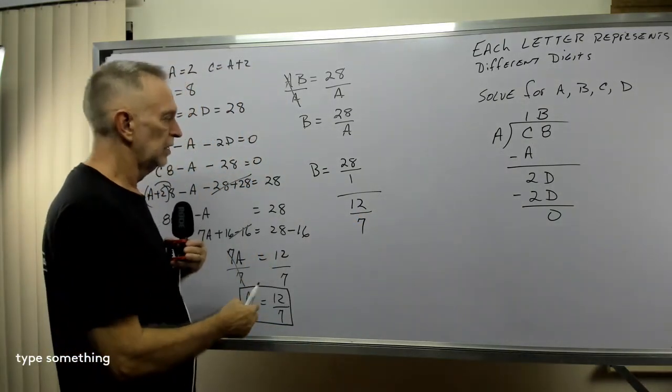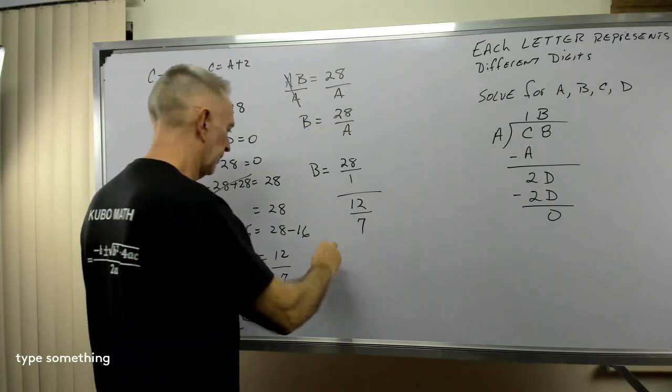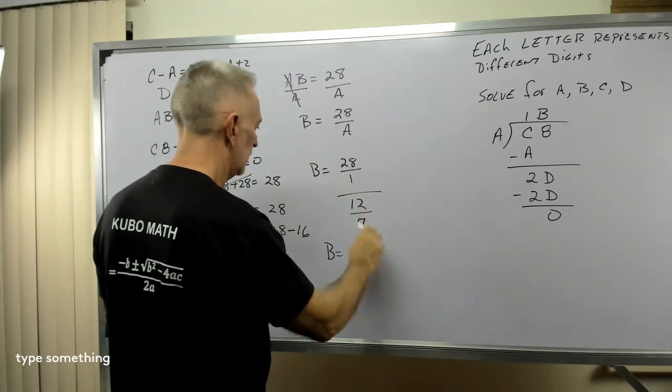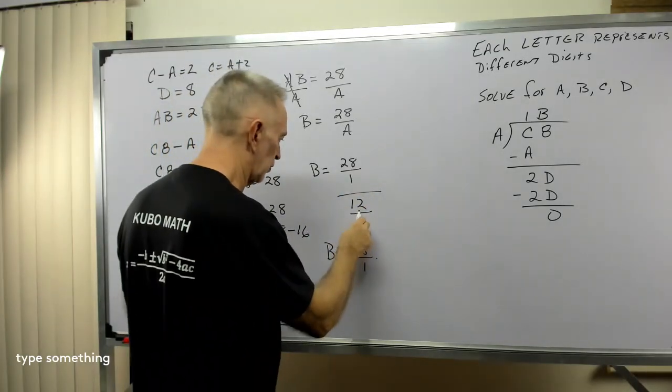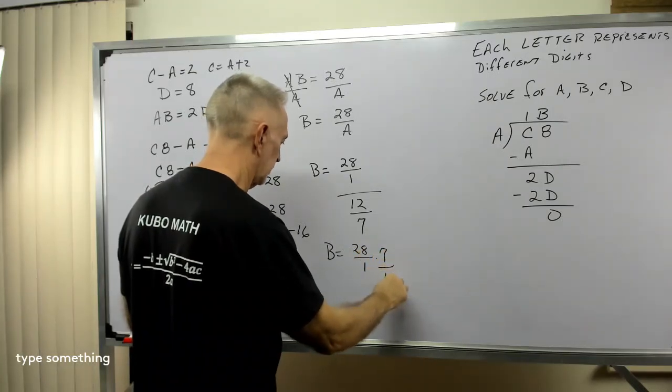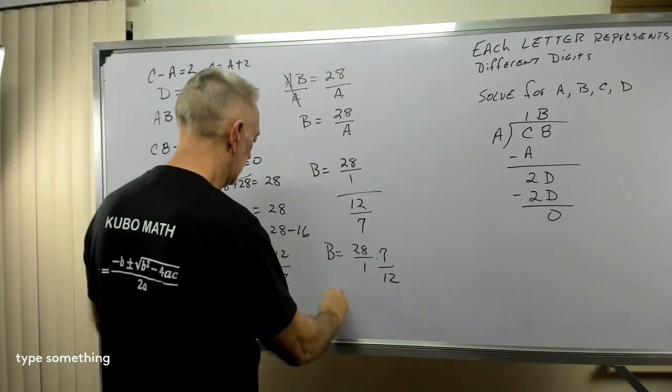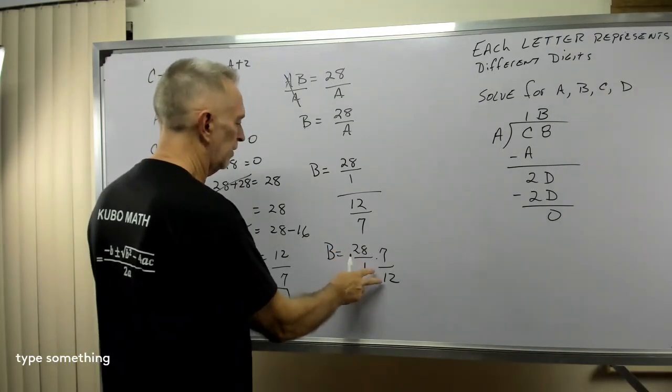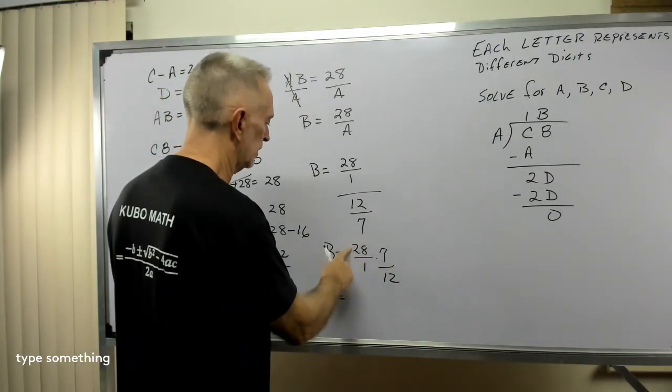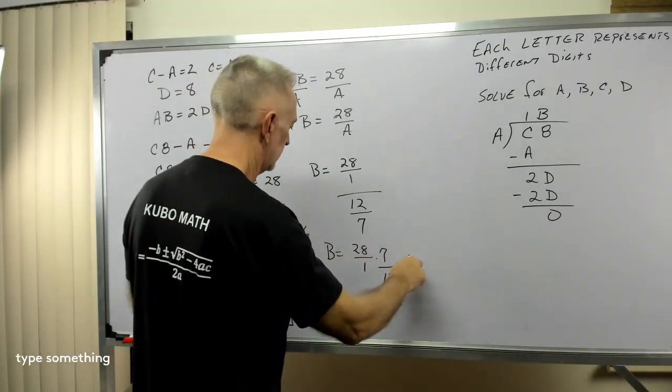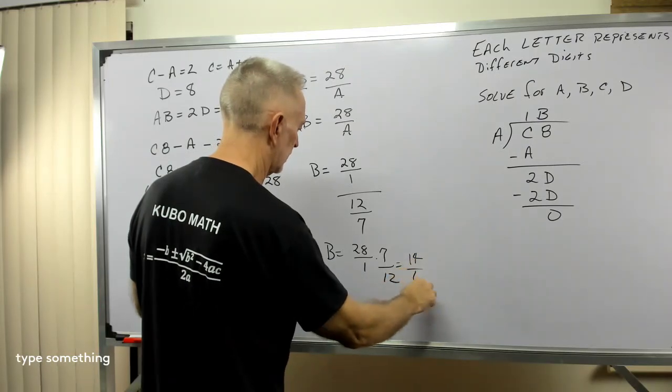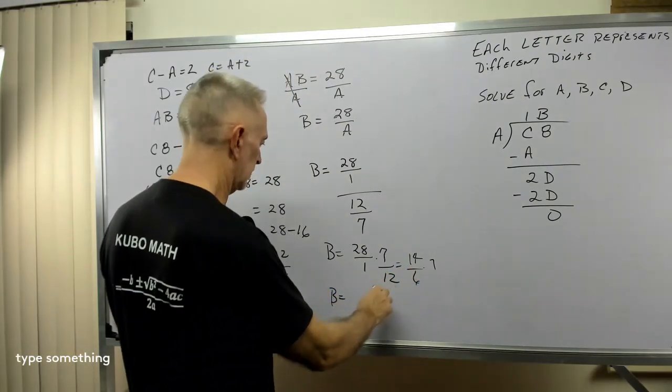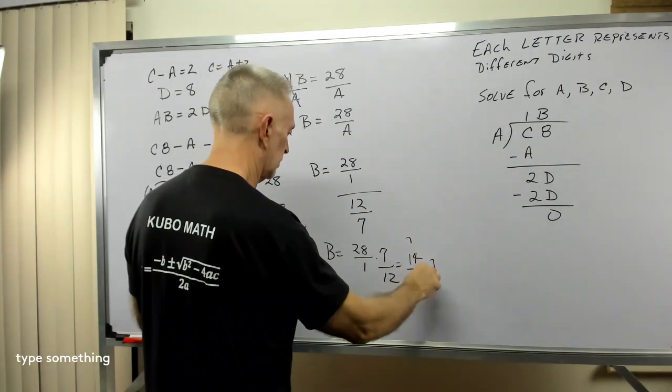Now, this is a complex fraction. But you invert and multiply. So, B equals 28 over 1 times, if we flip that over, I've got instead of 12 over 7, I have 7 over 12. Okay. So, B equals, let's see. So, 28 divided by 12. So, 2 go into this 14 times. So, let's see what we'd have. 2 go into that 14. 2 goes into this 6 times. And 14 times 7. So, 2 goes into this 7 times. 2 goes into that 3 times.